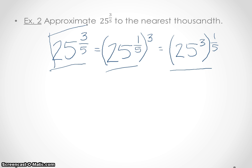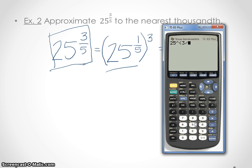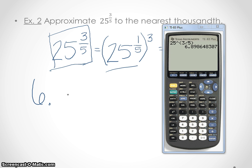The easiest expression to use is the original form, so I'll grab the calculator and enter 25 to the 3/5 power, remembering to use parentheses around 3/5. We get 6.898648307. They want us to round to the nearest thousandth — three decimal places. So we have 6.8986, and since the 6 makes the third decimal round up, our answer is 6.899.